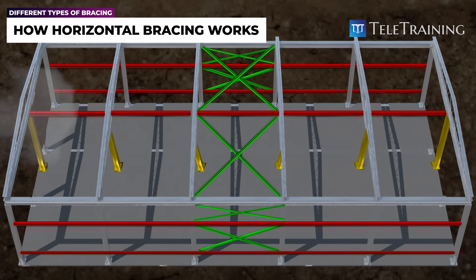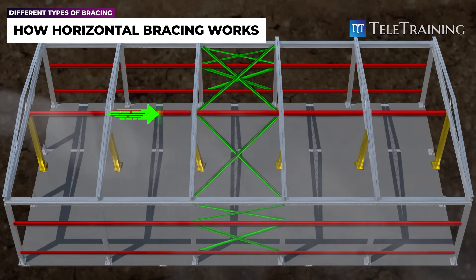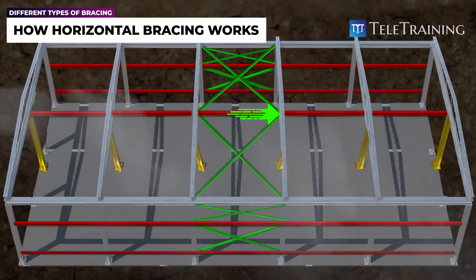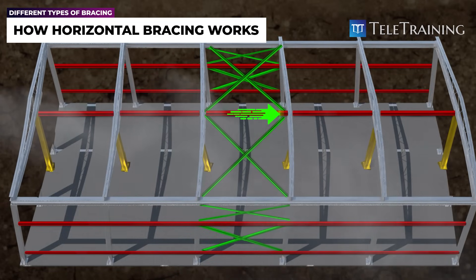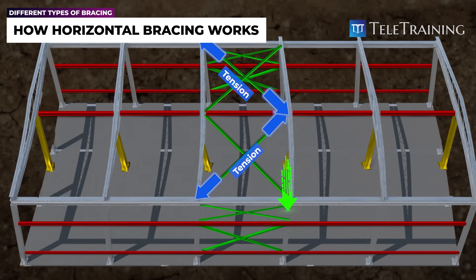If wind blows against the facade of this building from left to right, a lateral force will be transferred down the building through this central row of tie beams. When the tie beam deflects in this direction, the column also tends to move to the right. However, the roof bracing members will resist this movement by undergoing tension. As these members are put under tension, the load will be transferred to the vertical wall bracing and subsequently to the building foundation.